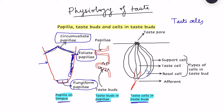Three types of papilla are there. To remember: circumvallate — 'V' is there, so it is present in a V-shaped area on the posterior part of the tongue. And foliate — 'late' sounds like 'lateral' — so this is present on the lateral edge of the tongue.